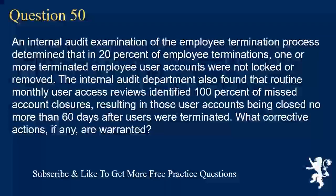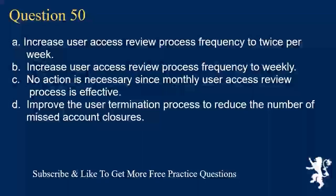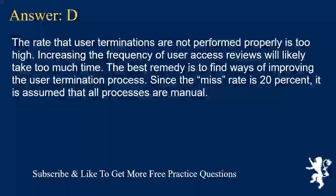Question 50. An internal audit examination of the employee termination process determined that in 20% of employee terminations, one or more terminated employee user accounts were not locked or removed. The internal audit department also found that routine monthly user access reviews identified 100% of missed account closures, resulting in those user accounts being closed no more than 60 days after users were terminated. What corrective actions, if any, are warranted? A. Increase user access review process frequency to twice per week. B. Increase user access review process frequency to weekly. C. No action is necessary since the monthly user access review process is effective. D. Improve the user termination process to reduce the number of missed account closures. Answer D. The rate that user terminations are not performed properly is too high. Increasing the frequency of user access reviews will likely take too much time. The best remedy is to find ways of improving the user termination process. Since the miss rate is 20%, it is assumed that all processes are manual.